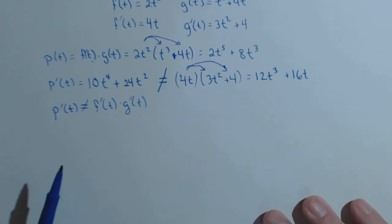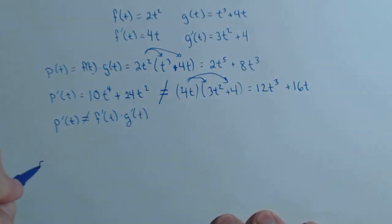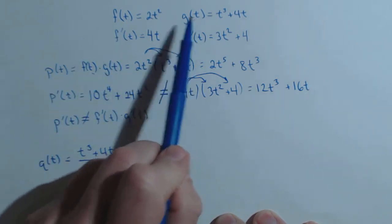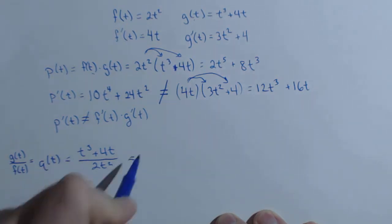We can actually show the same thing for a quotient. So let's let q of t equal the quotient of two of these. How about t cubed plus 4t over 2t squared? So basically, I let q of t be g of t over f of t. And the question will be whether or not the derivative of q is equal to g prime of t over f prime of t.